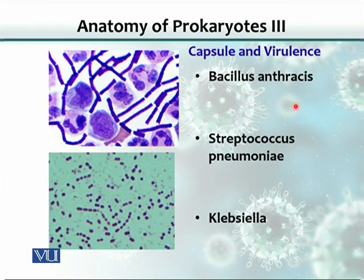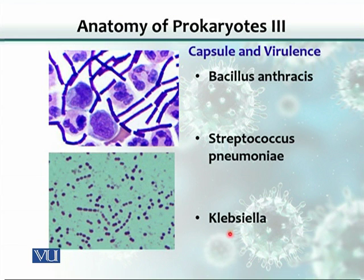Bacillus anthracis causes anthrax in animals — a very deadly disease that can also infect humans. Then there is Streptococcus pneumoniae, which causes pneumonia in humans. Klebsiella is another organism — a rod-shaped gram-negative bacterium that causes various, mostly secondary, infections in humans.